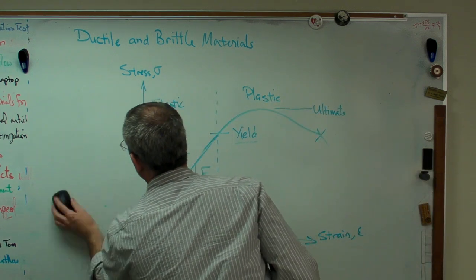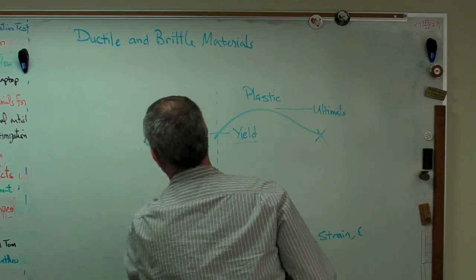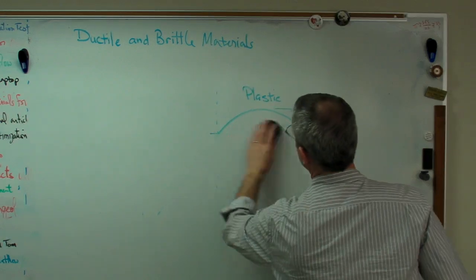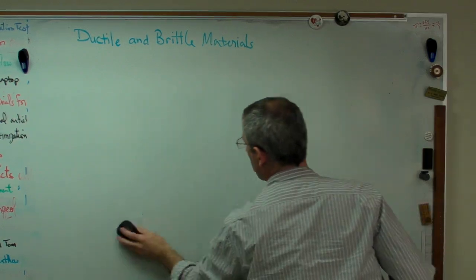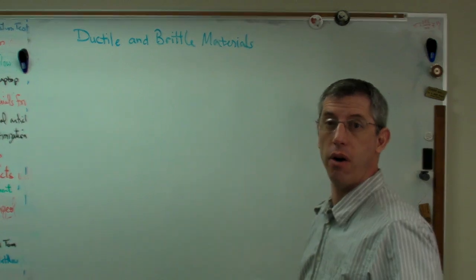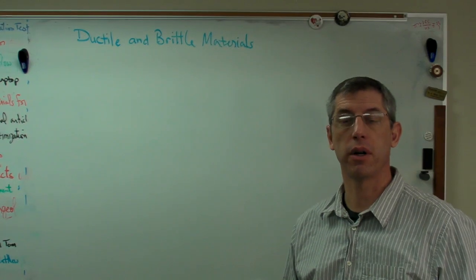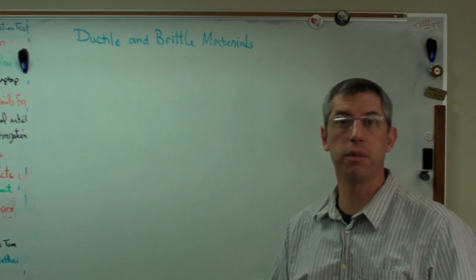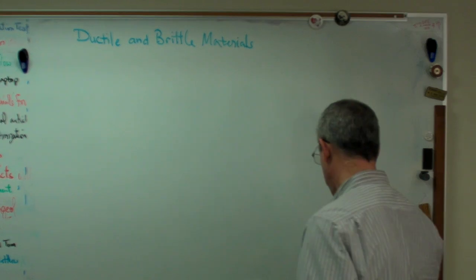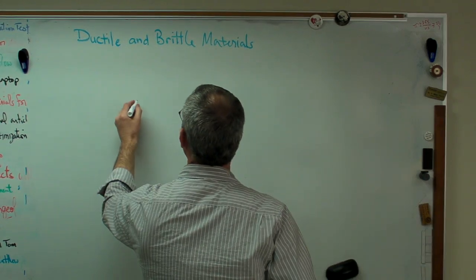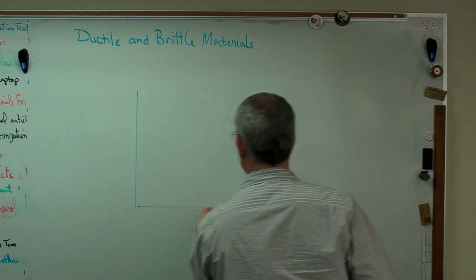Let's look at now brittle materials. Brittle materials are like glass and ceramic, the things that deform very little, sometimes not at all before, or I'm sorry, plastically deform very little, sometimes not at all before rupture. So a brittle material looks like this.